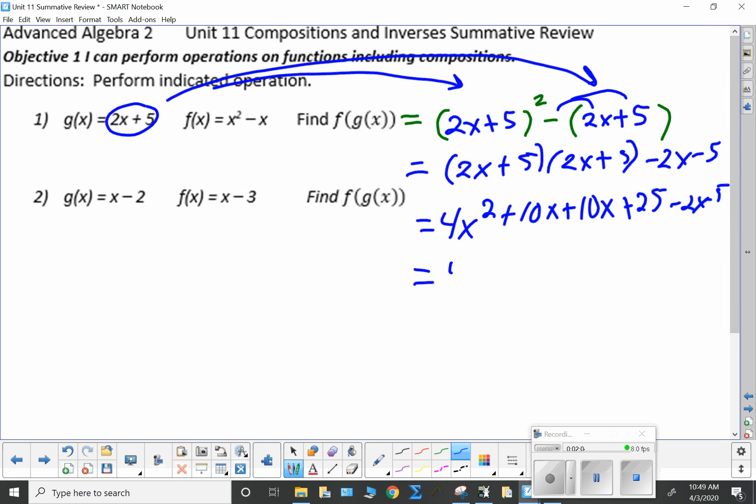Combining all your like terms, you have 4x squared. 10 plus 10 is 20 minus 2 is 18x. 25 minus 5 is 20. Leave it there. You do not need to factor it. Remember that you're just doing the composition.